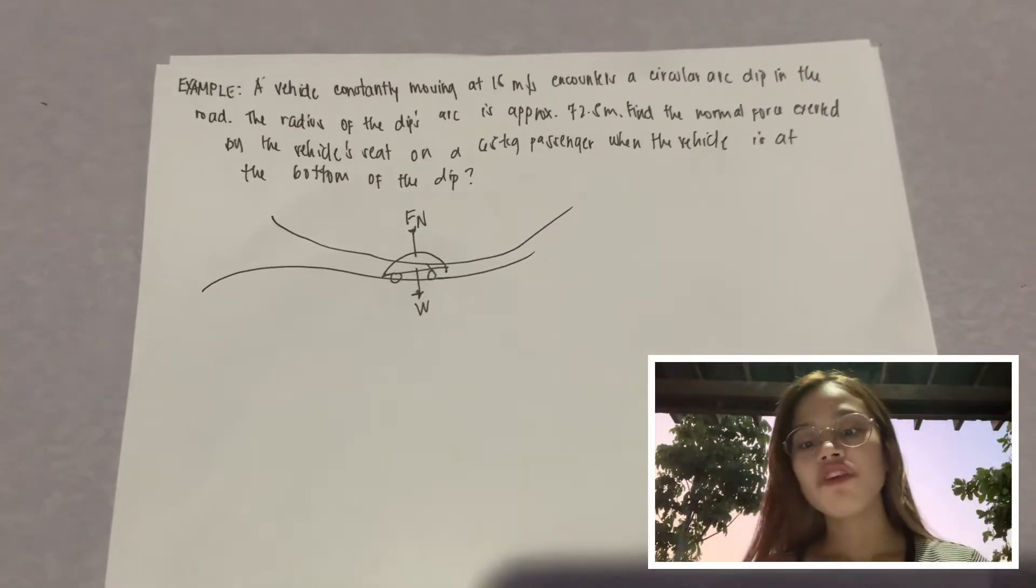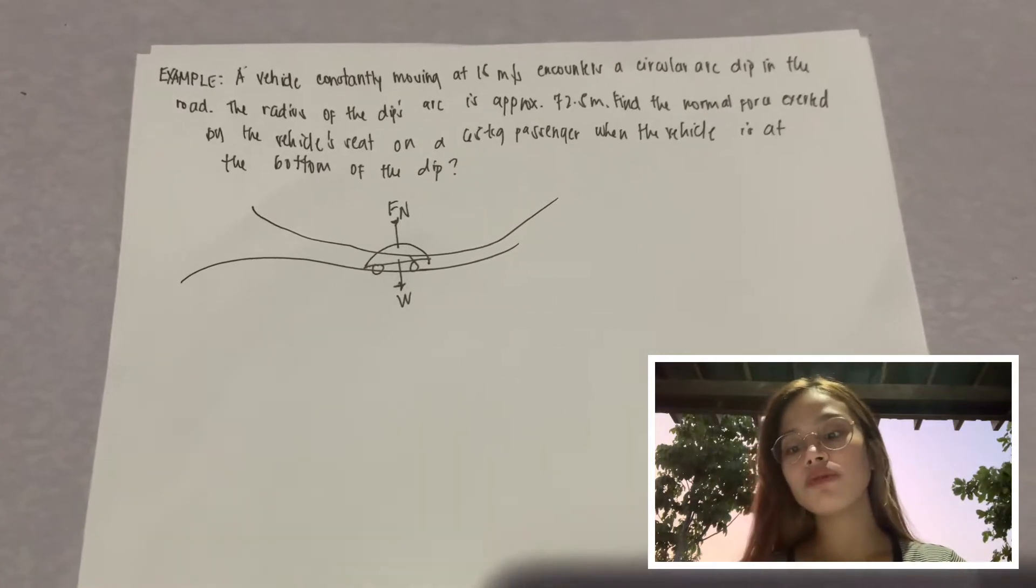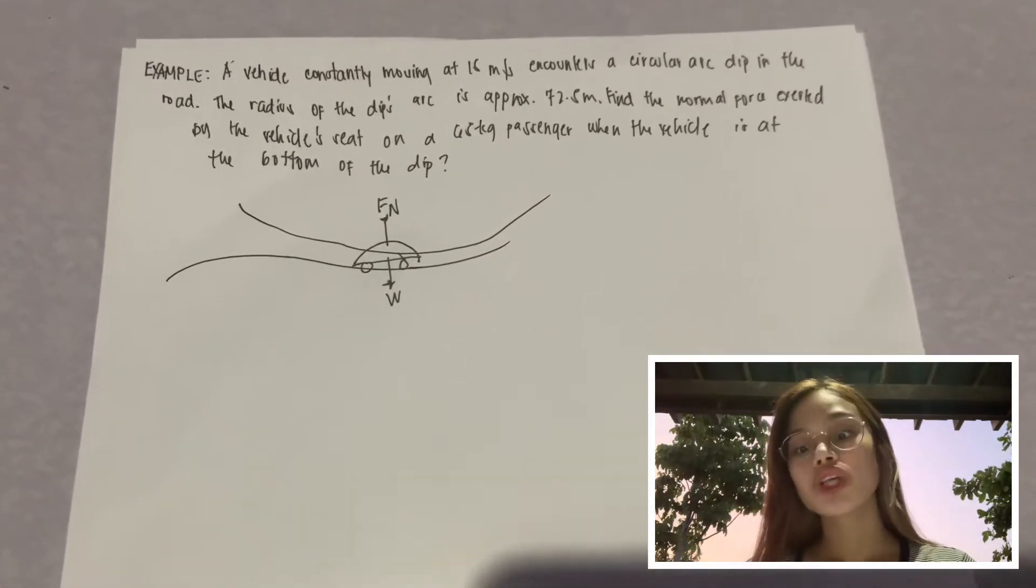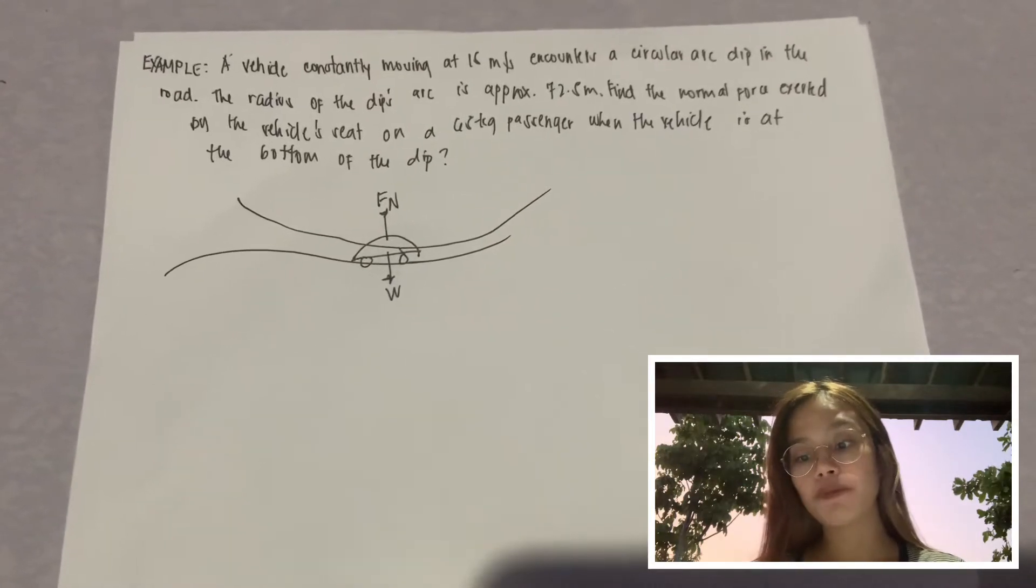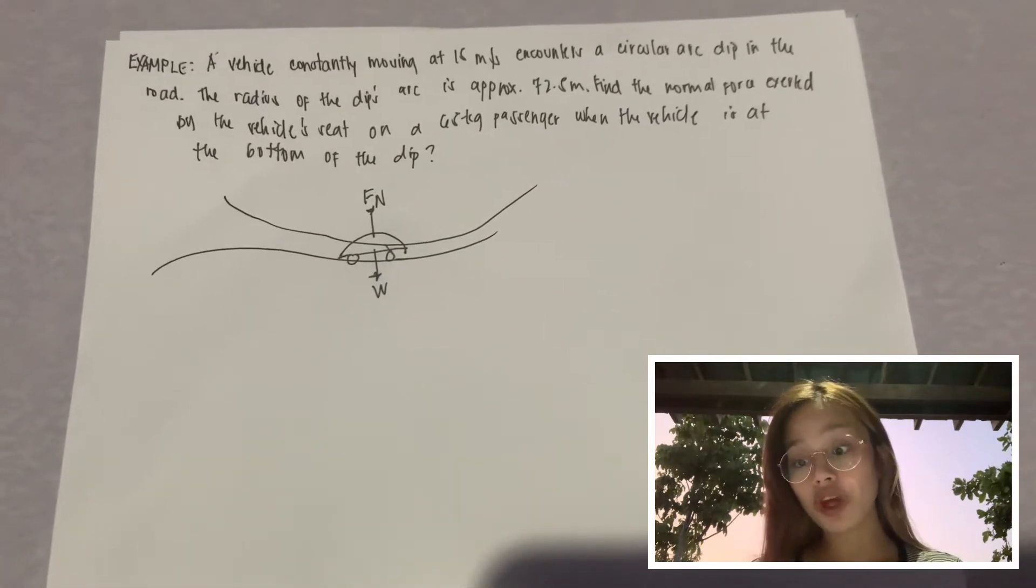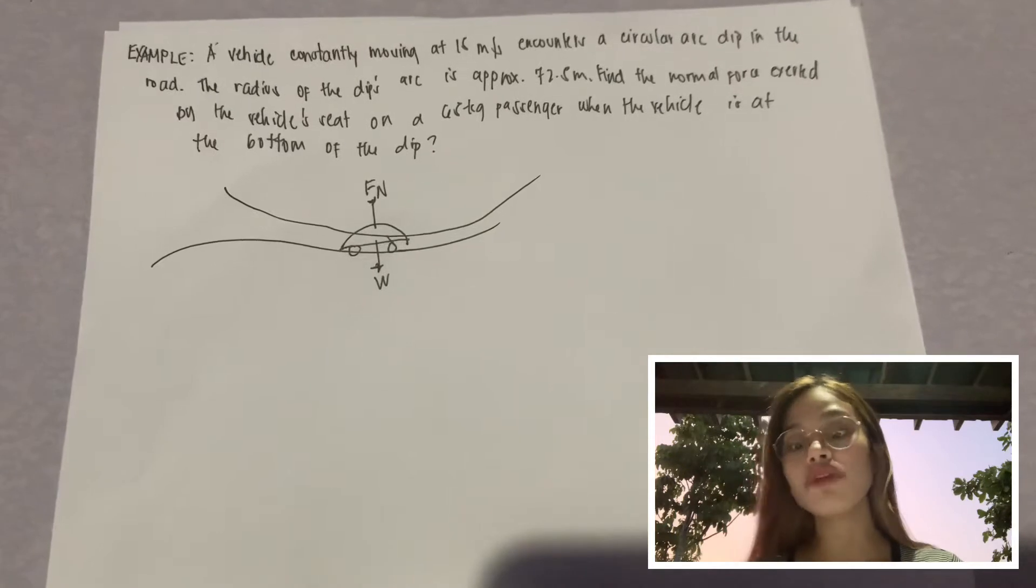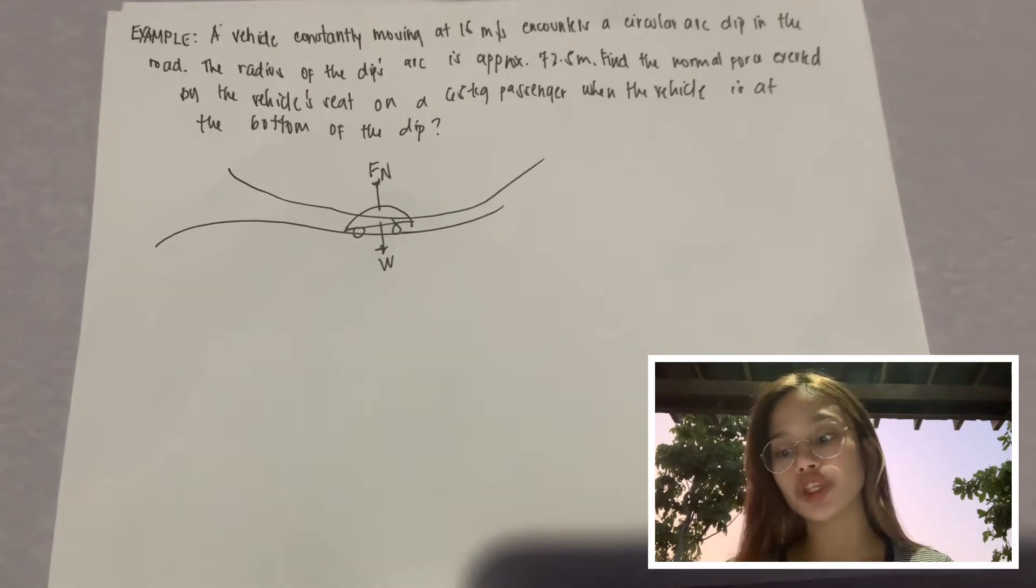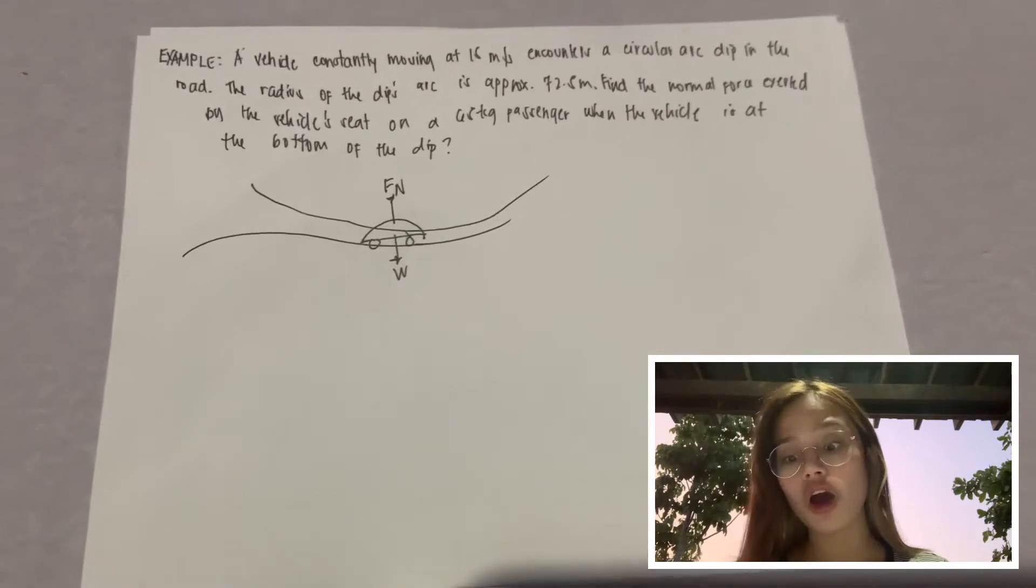So here is the problem. A vehicle constantly moving at 15 meters per second encounters a circular arc dip in the road. The radius of the dip's arc is approximately 72.5 meters. Find the normal force exerted by the vehicle seat on a 65 kilogram passenger when the vehicle is at the bottom of the dip.